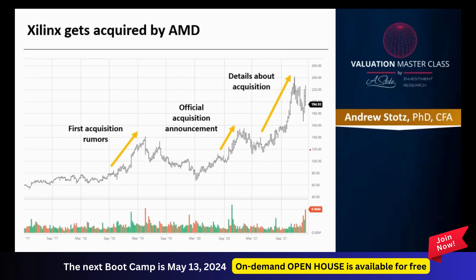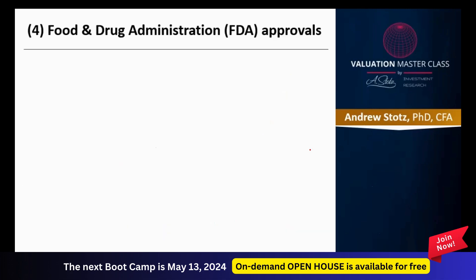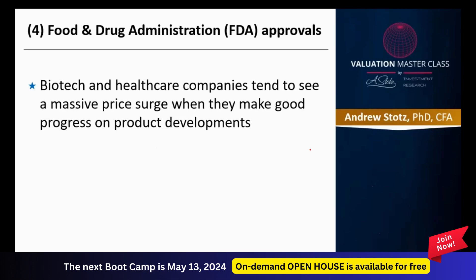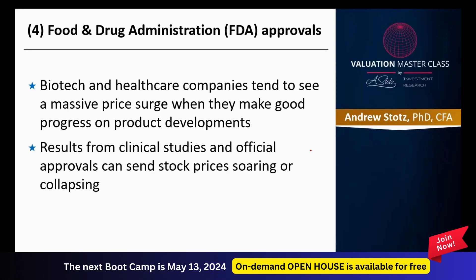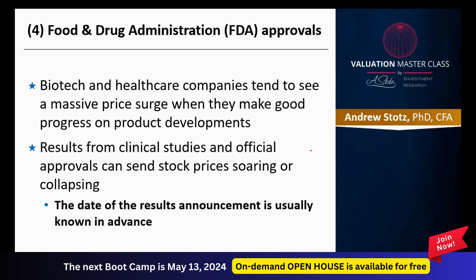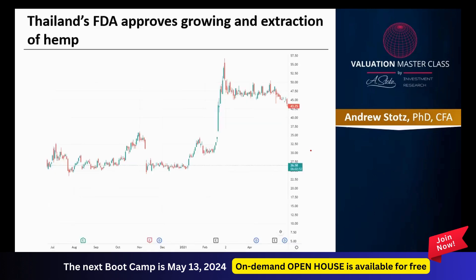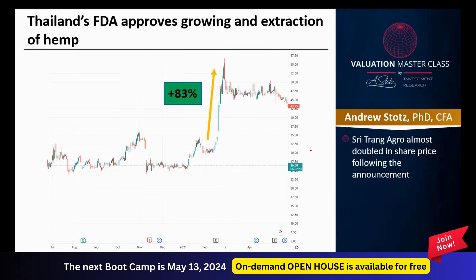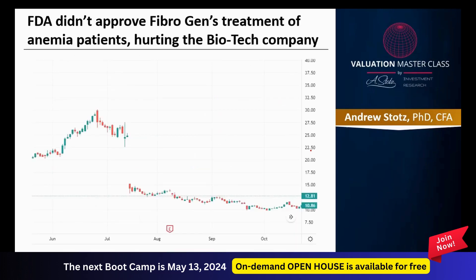Food and Drug Administration approvals: biotech and healthcare companies tend to see massive price surges when they make good progress on product developments, clinical study results, or official approvals — which can send stock prices soaring or collapsing. The date of the results announcement is usually known in advance. Here we see Thailand's FDA approving the growing and extraction of hemp, which caused Sreetang Agro (STA) to almost double in price following that announcement.